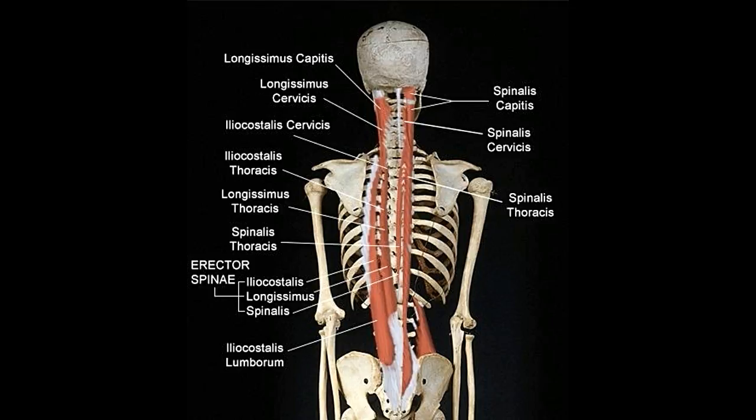Iliocostalis cervicis: arising from the angles of the 3rd, 4th, 5th, and 6th pair of ribs, the iliocostalis cervicis muscle inserts at the transverse process of the cervical vertebrae C4 to C6. This muscle helps in extending and hyperextending the cervical vertebrae. It also facilitates the lateral flexion of the cervical vertebrae.